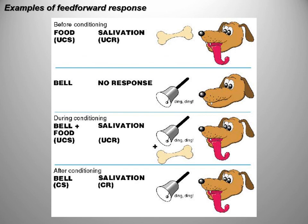Feed-forward is the trickiest and most complex of the three. The best example of a feed-forward response would be Pavlov's dogs: you condition the dog to begin salivating even though there's no food present. If an unconditioned dog gets a signal like a bell, it will not salivate. However, if you condition that dog, it will salivate even though there's no food present. That's feed-forward — it's an anticipatory response. It is anticipating a change in homeostasis.